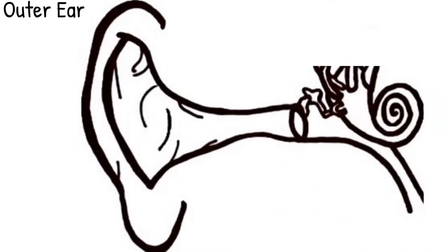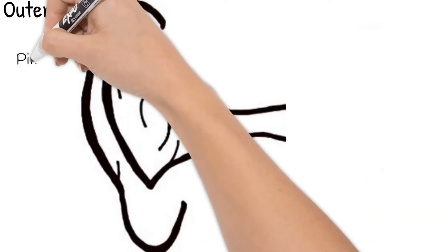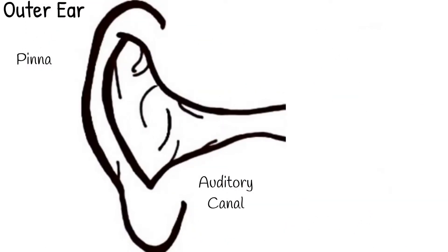First, your outer ear. It has two parts, the pinna and auditory canal. The pinna is the part of your ear you see and probably think of when talking about an ear. The pinna is made up of cartilage and skin. It has the shape it does to funnel sound waves to the auditory canal.